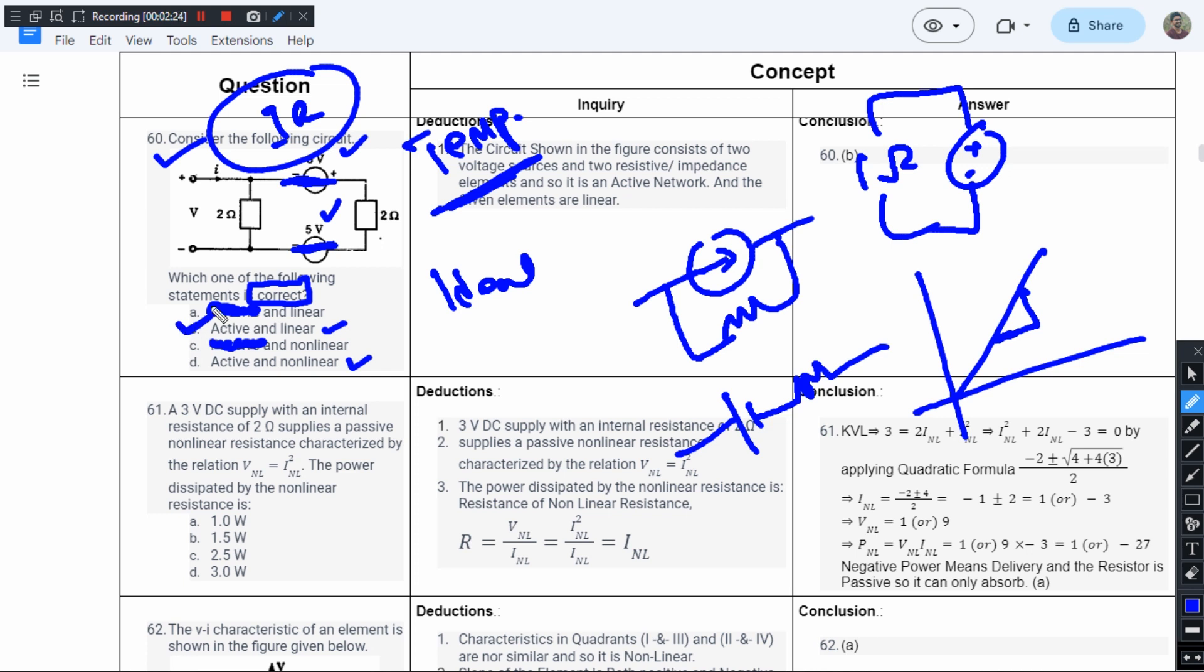The given circuit is both active and linear, so option B is the right answer for this question. The given circuit or network is active and linear.